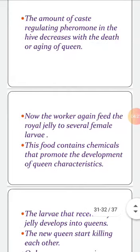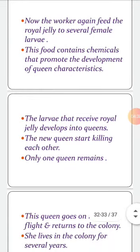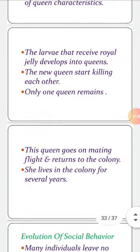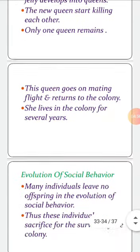The amount of caste-regulating pheromone in the hive decreases with the death or aging of the queen. The workers then feed royal jelly to several female larvae. This food contains chemicals that promote the development of queen characteristics. The larvae that receive royal jelly develop into queens. The new queens start killing each other, and only one queen remains. This queen goes on a mating flight for reproduction and returns to the colony, where she lives for several years.